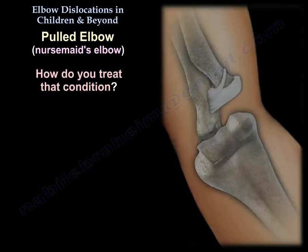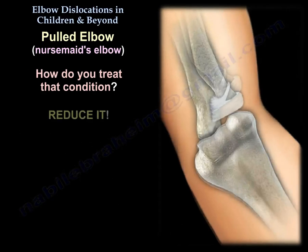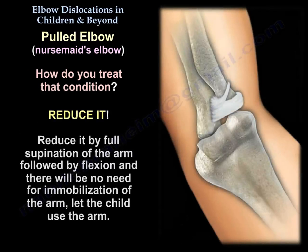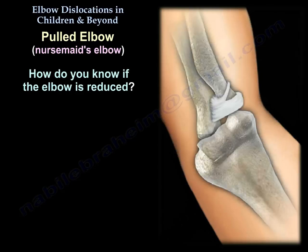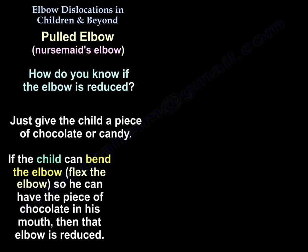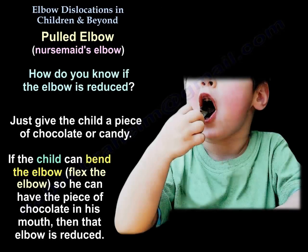To treat pulled elbow, reduce it by supination of the arm followed by flexion — there is no need for immobilization. Let the child use the arm. To confirm reduction, give the child a piece of chocolate or candy. If the child can bend the elbow to bring it to their mouth, the elbow is reduced.